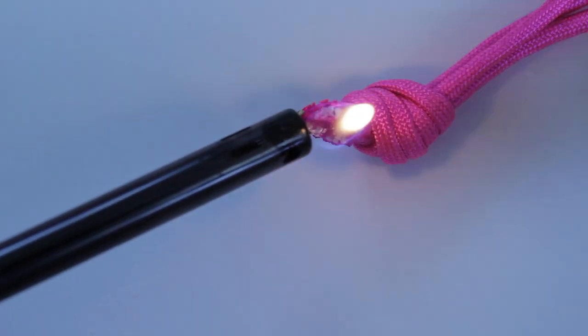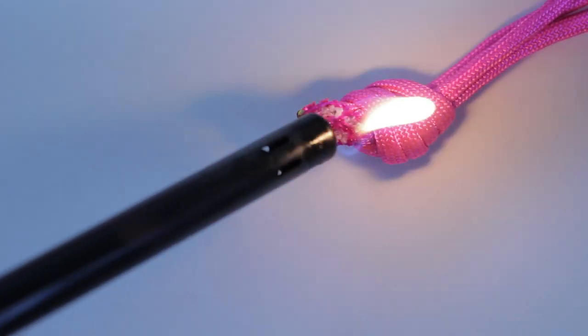The final step is just to carefully take a lighter and burn the ends of the rope. This is going to prevent it from fraying and then you're done.